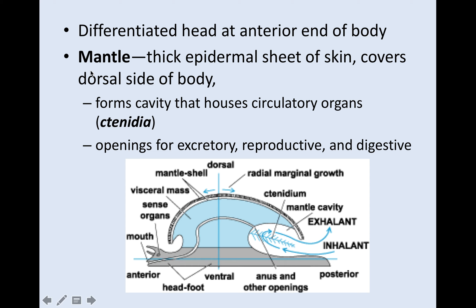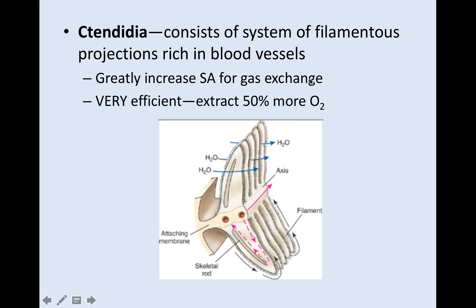Focusing on the mantle — all of them have mantles. It's a very thick epidermal sheet of skin covering the dorsal side of the body. A lot of times it houses circulatory organs, especially the ctenidia, and there are also openings for excretory, reproductive, and digestive organs. Ctenidia is how it exchanges oxygen and gets waste products out. It's a system of filamentous projections very rich in blood vessels. The fine filaments increase surface area for gas exchange, and it is extremely efficient.